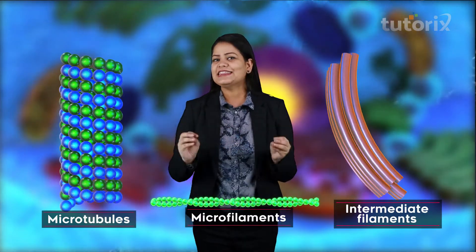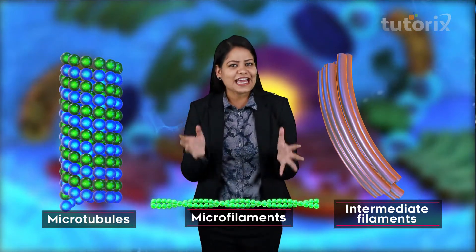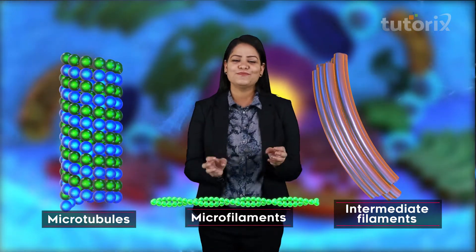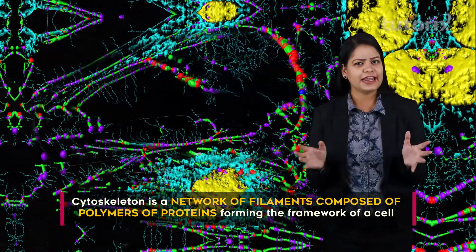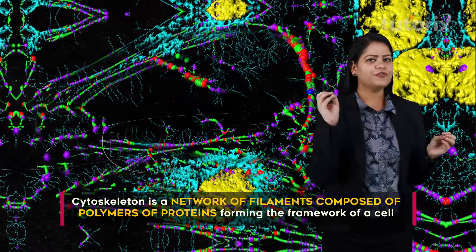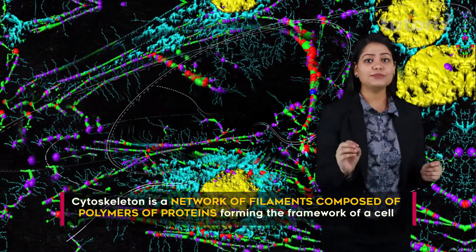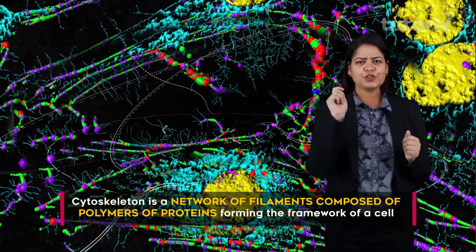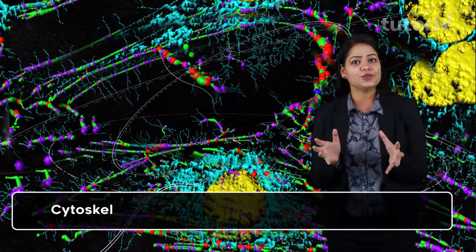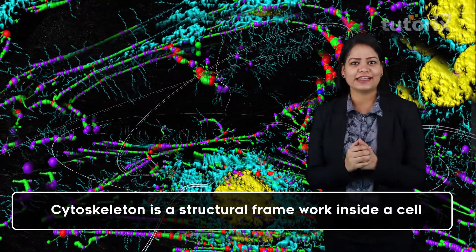In this session, let us talk about the skeletal system of the cell, or cytoskeleton. To begin with, the cytoskeleton is a network of filamentous structures, which are nothing but the polymers of specific protein molecules. So you can say that the cytoskeleton is the structural framework present inside a cell.